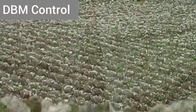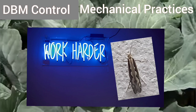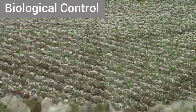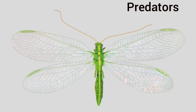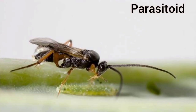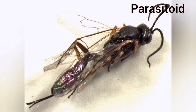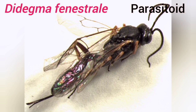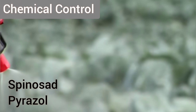In mechanical practices, blue light traps can catch a large number of DBM adults. For biological control, wasps and spiders are common predators. Chrysopa lacornia is also a good predator. Trichogramma chilonis is an egg parasitoid and Cotesia plutellae is a larval parasitoid. Diadegma fenestrale are dominant larval parasitoids under Indian conditions. In chemical control, spinosad and pyrazoles can be applied to the crop.